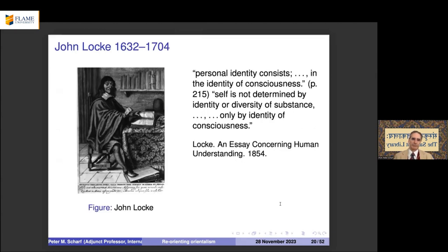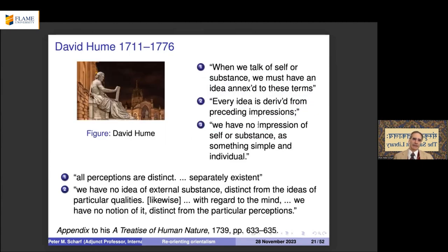John Locke disagreed with identifying the spirit as an entity responsible for personal identity. What he recognized was that personal identity consists in the identity of consciousness — what you're aware of, your memory, whatever consciousness can bring into a single frame of reference. It is not determined by identity with a substance, as Descartes considered the soul to be.